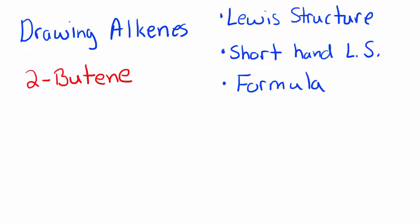The first thing you need to do when you're drawing a Lewis structure is to figure out how many carbons there should be. So if we look at the name here you see it starts with but. You should know that that means four carbons.